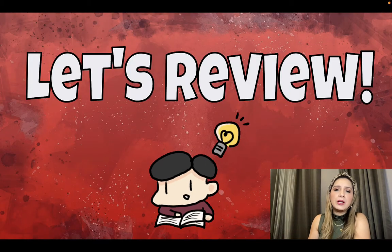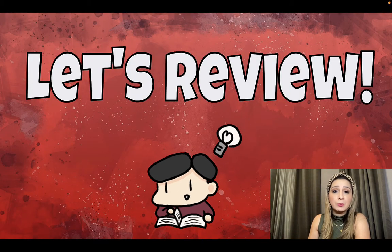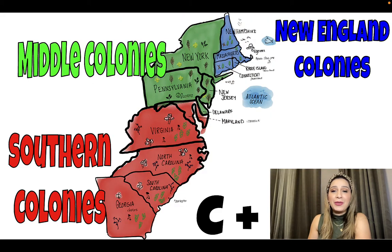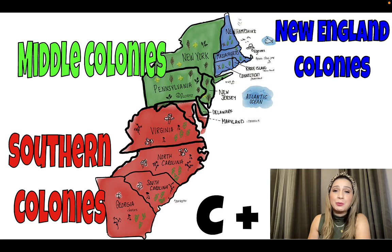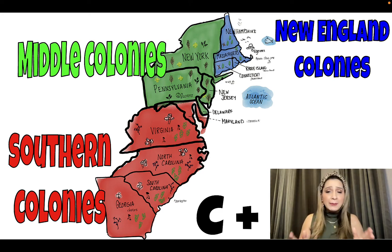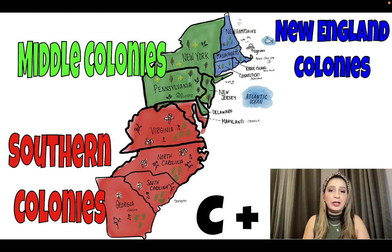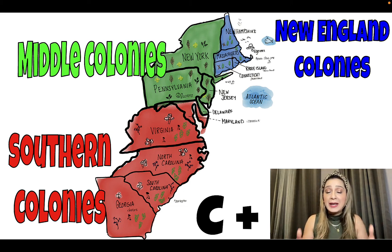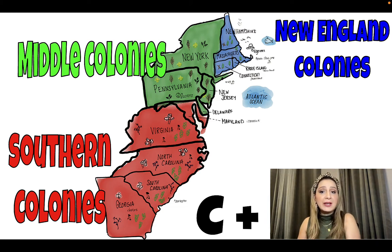Let's go ahead and review a couple of the key points that we've been discussing in the era of exploration and colonization, starting off with the original 13 colonies. We all know that they were established for different reasons. We know that there are three regions, and a region is a place with similar characteristics. We have the New England colonies that were set up primarily for religious reasons. These were individuals who were escaping persecution seeking religious freedom. A region is made because of its characteristics.